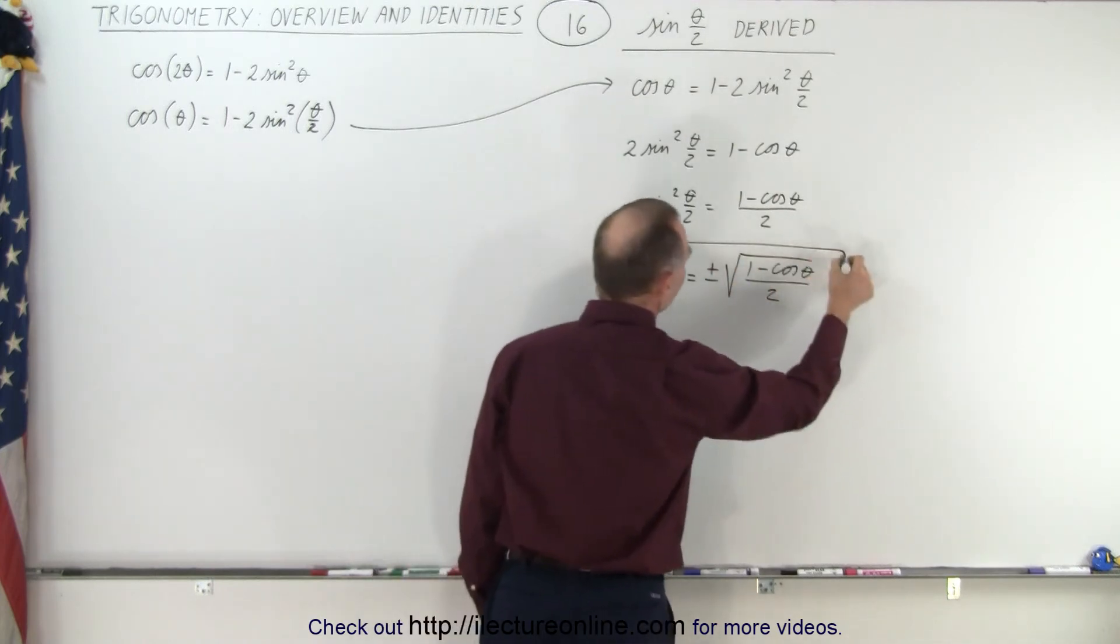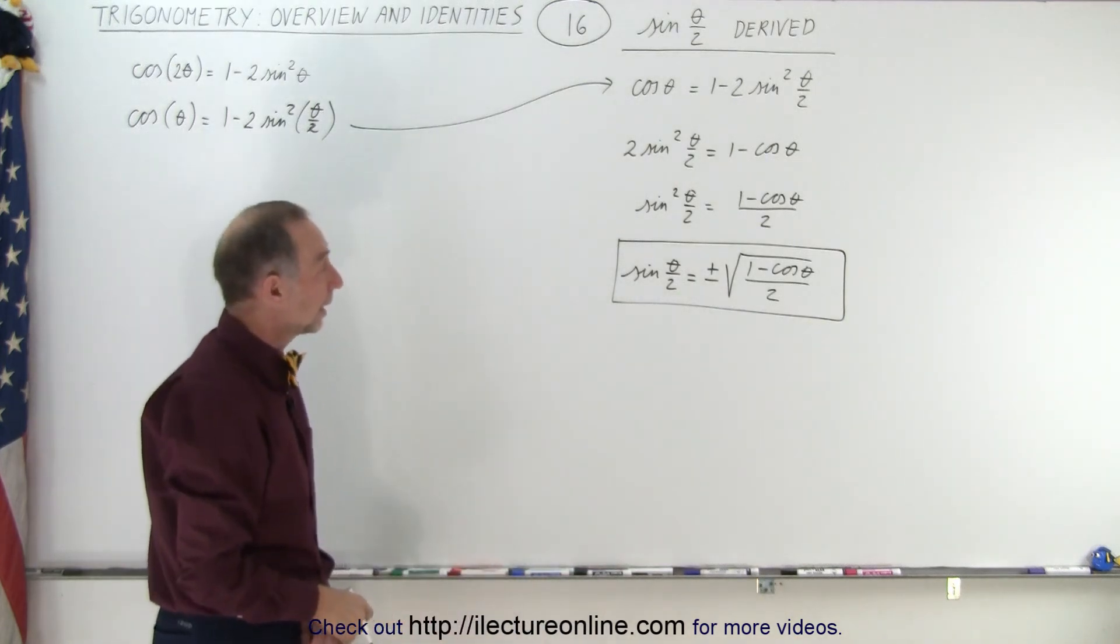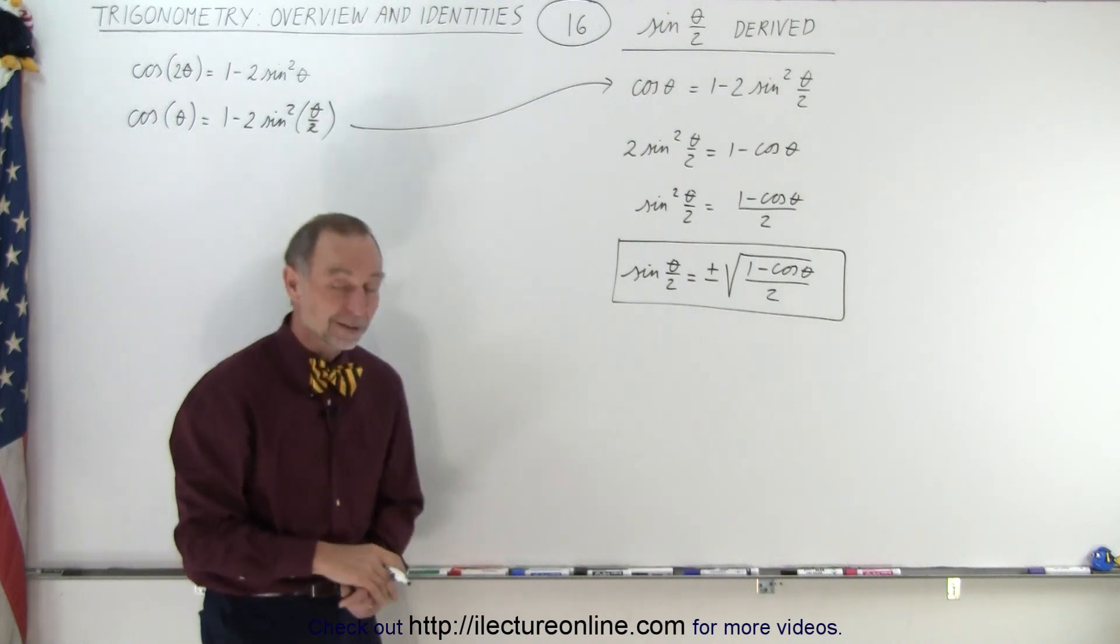And there you go. That's how you find the relationship between the sine of a half angle and how it's expressed in terms of a whole angle. In this case, the square root of 1 minus the cosine of theta divided by 2. And that is how it's done.